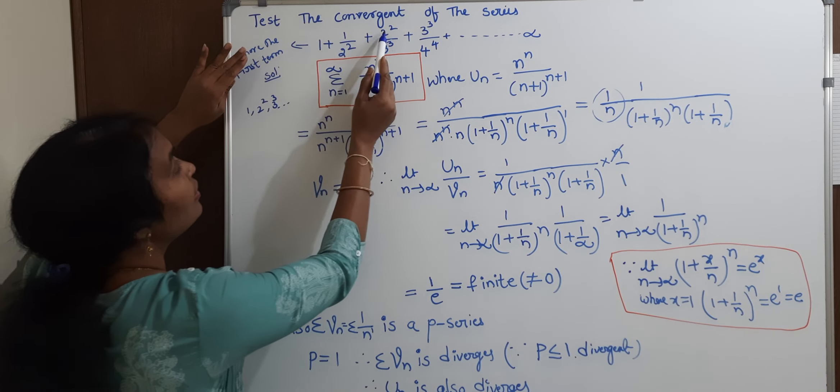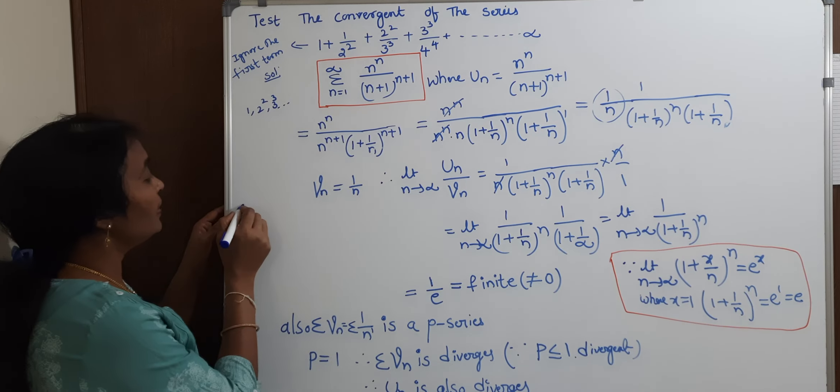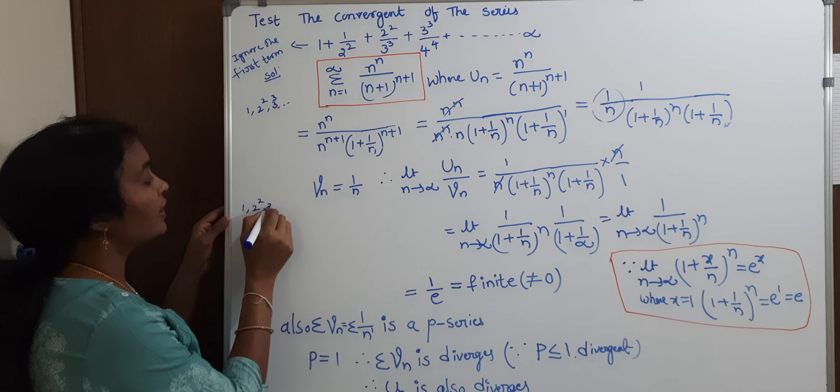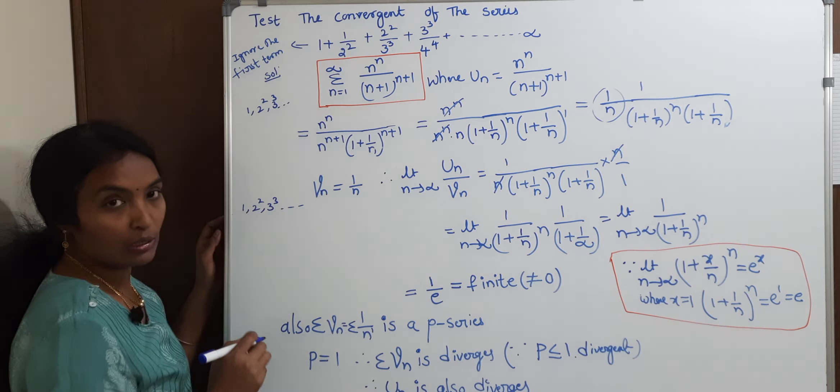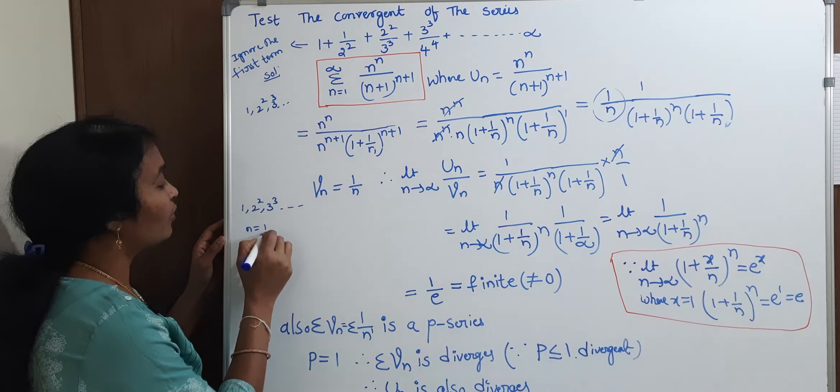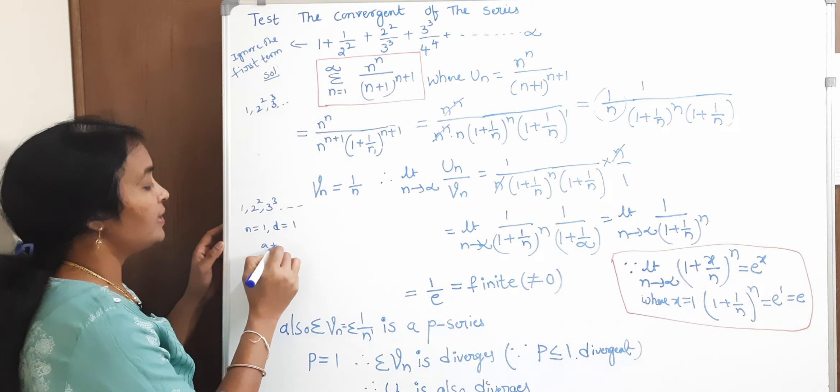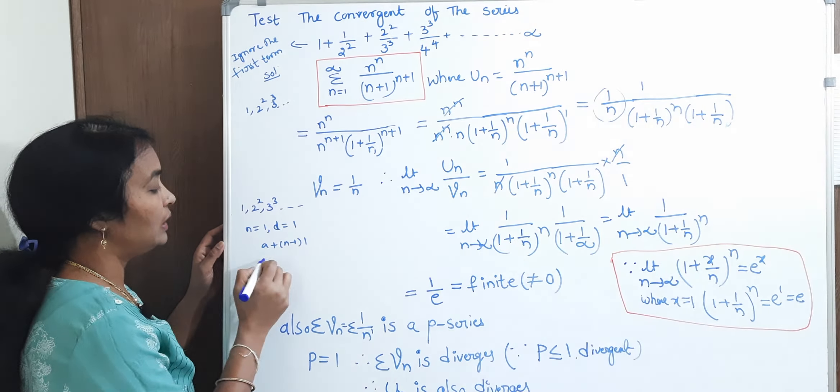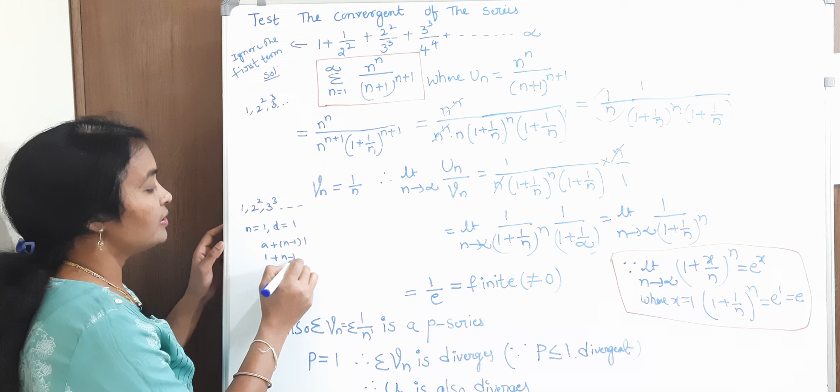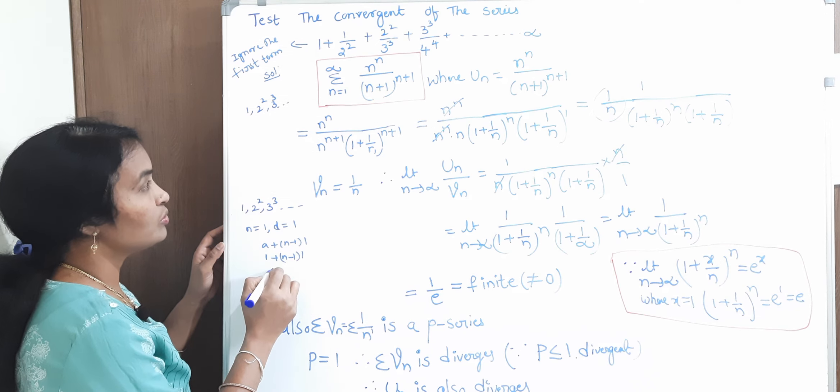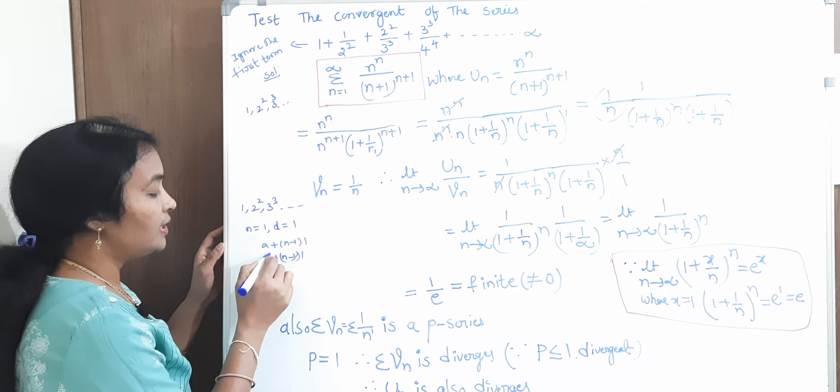Okay, 1, 2, 3 cube. What do we have to say? 1, 2 square, 3 cube. What do we have to say? N equal to what? 1. And the common difference is what? 1. A plus N minus 1 into D. 1 plus N minus 1 into 1. And N to us the same thing. N to us the same thing. N to us the same thing. But we have to cancel the same thing.